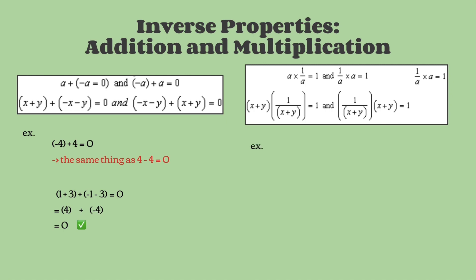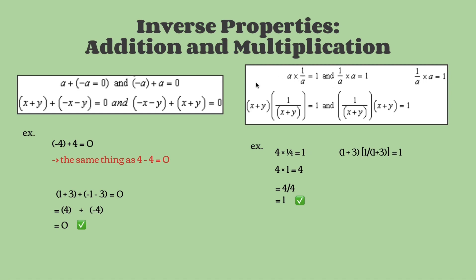Now let's move on to multiplication. We'll use 4 as our variable again. Our equation is 4 times one-fourth equals 1. To solve it, we start by multiplying the numerators: 4 times 1 is equal to 4. So now our equation is 4 over 4, which is equal to 1. So this checks out.